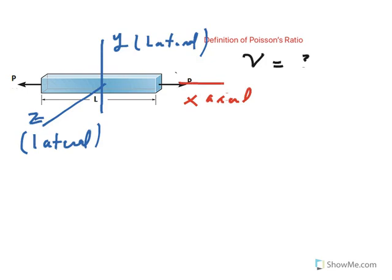Now the definition of Poisson's ratio is very simple. Poisson's ratio is defined as the negative of the ratio of lateral normal strain, so it doesn't matter if it could be epsilon sub z or epsilon sub y, divided by the axial strain.